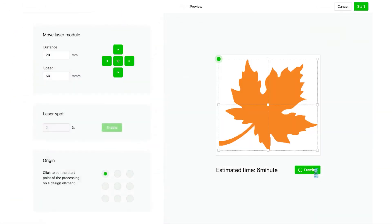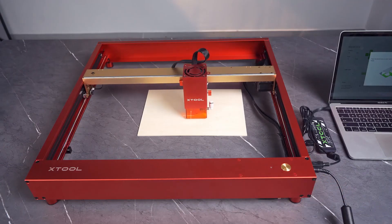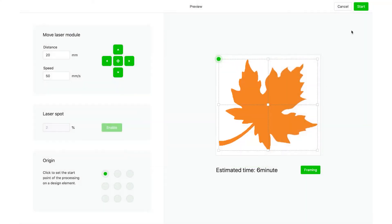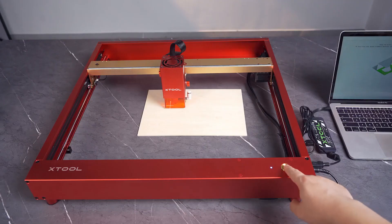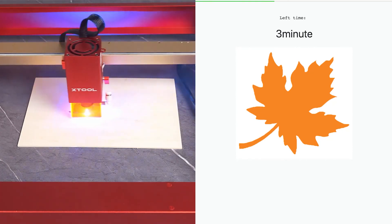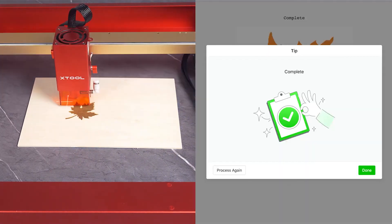Click Framing. Press the button to start framing. Preview whether the design elements are to be processed in the expected area. Press the button to start processing. Click Start to start processing. Wait for the processing to complete. Click Done after the processing is complete.